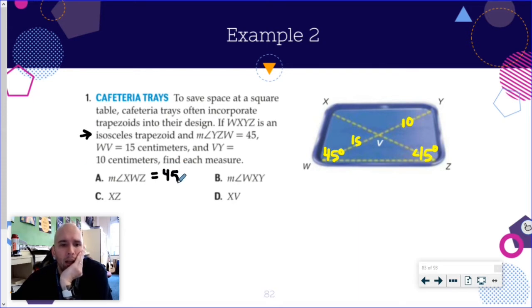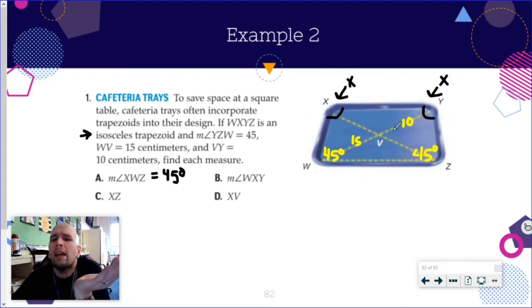Alright. Now what's going to go on for B is we need to find WXY, which is this angle right here. Now this is a trapezoid. All trapezoids add up to 360. X, Y, or angle X and angle Y here are exactly the same. So if I want to call you X for now, this is going to be X2. I'm just picking X. I could have used A if I wanted to. X, X, 45, and 45 add up to 360 degrees.